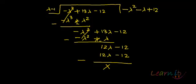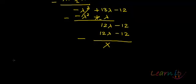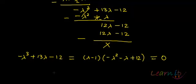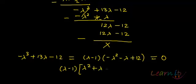So the quotient factor is minus lambda squared minus lambda plus 12. That means minus lambda cubed plus 13 lambda minus 12 equals (lambda minus 1)(minus lambda squared minus lambda plus 12), which should equal 0. Taking minus 1 common from the second factor gives lambda squared plus lambda minus 12.